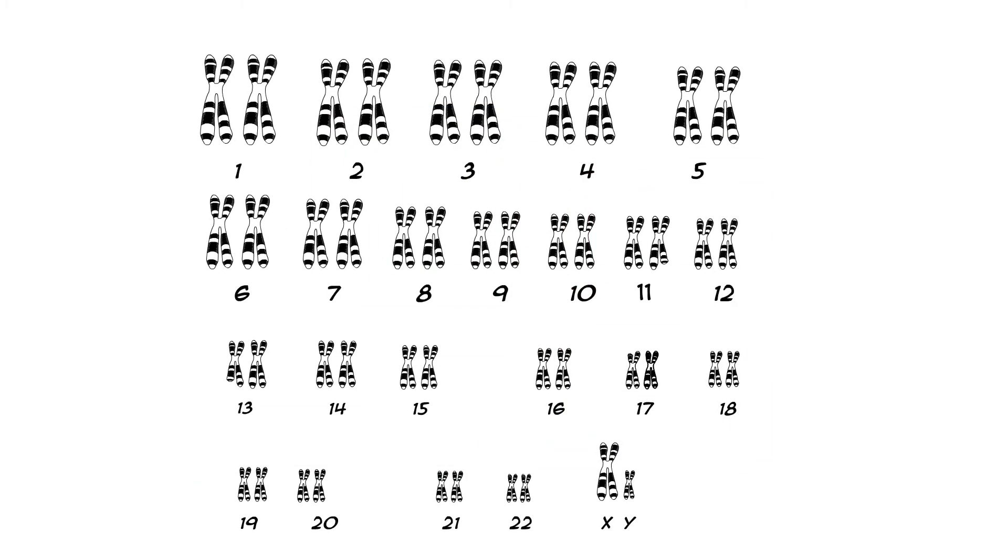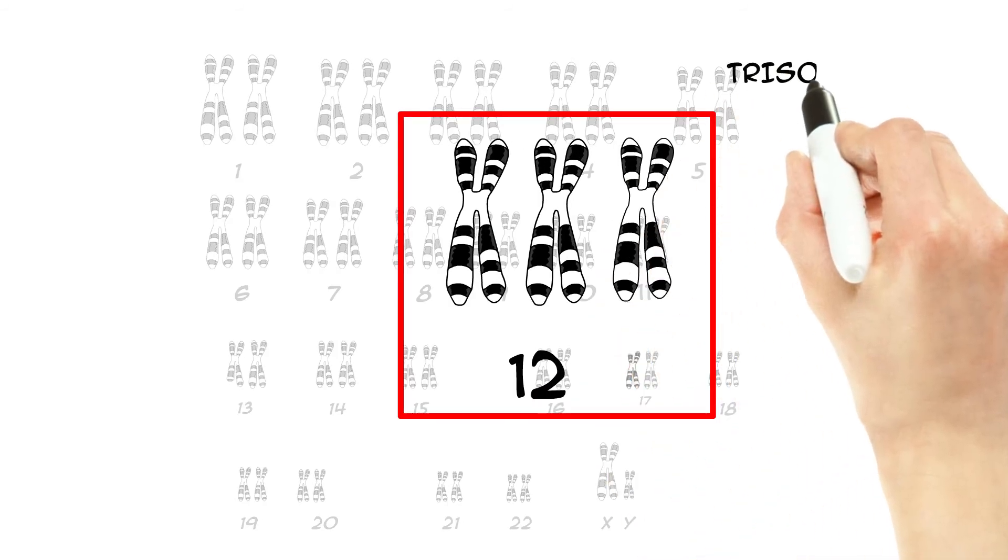Some CLL cells have an extra chromosome 12, which is called trisomy 12. People with any of these three changes tend to need treatment sooner than other CLL patients.